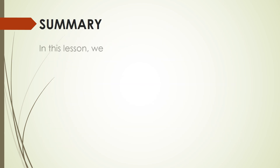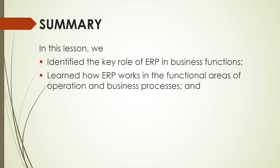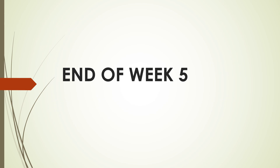In summary, in this lesson we identified the key role of ERP in business functions. We also learned how ERP works in the functional areas of operation and business processes, and we defined the functional areas of information systems and enterprise system architecture. That ends our week five focusing on enterprise resource planning systems and business models. Thank you so much for watching this video. Please take care and stay healthy. Goodbye.